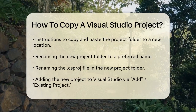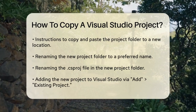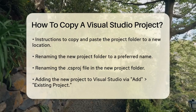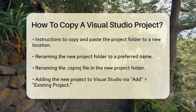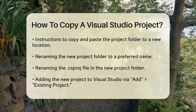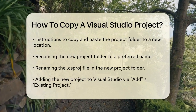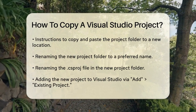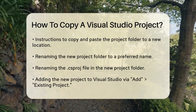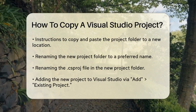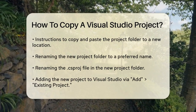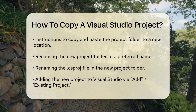Now open the properties for the new project. Under the Application section, change the assembly name and default namespace to match your new project name. This ensures that your new project is fully independent from the original.